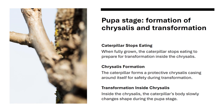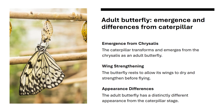Once fully grown, the caterpillar stops eating and forms a chrysalis. Inside this protective case, it slowly changes shape during the pupa stage. After transformation, the butterfly emerges from the chrysalis. It rests while its wings dry and strengthen, and at this stage it looks completely different from the caterpillar it once was.